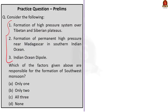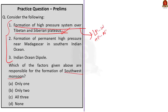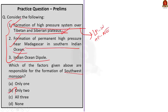Practice Question 3: Three factors are given; find which is responsible for the formation of the southwest monsoon. Statement 1 — formation of high pressure system over Tibetan and Siberian plateau — is incorrect; this is responsible for the northeast monsoon. Statement 2 — formation of permanent high pressure near Madagascar in the southern Indian Ocean — is correct. Statement 3 — Indian Ocean Dipole — is also correct. The correct answer is option B; only statements 2 and 3 are correct.